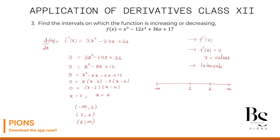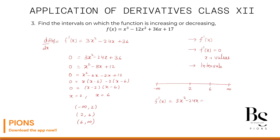Choose 0 from the interval (-∞, 2) and substitute into f'(x) = 3x² - 24x + 36. Putting x = 0: 0 - 0 + 36 = 36, which is positive. If f'(x) > 0, the function is increasing in that interval. So the function is increasing on (-∞, 2). Now choose x = 3 from the interval (2, 6): f'(3) = 3(9) - 24(3) + 36 = 27 - 72 + 36 = -9, which is negative. So the function is decreasing on (2, 6).